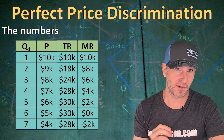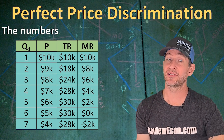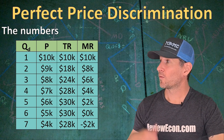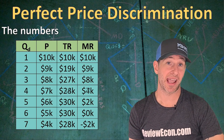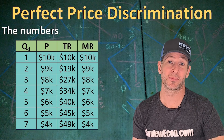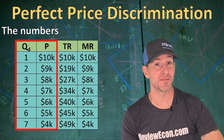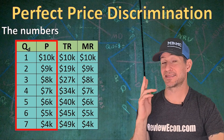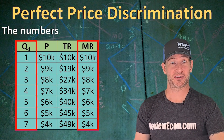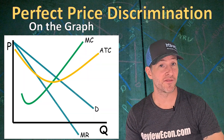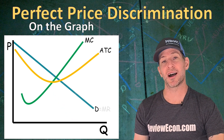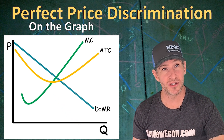But if this firm perfect price discriminates and charges the first student $10,000, the second student $9,000, the third student $8,000, and so on, we would see the total revenue change. With that, the marginal revenue increases to being equal to the price being charged. If we graph out the quantity and price columns, that is the demand curve. And when we graph the quantity with the marginal revenue, that gives us the marginal revenue curve. On the graph, that means when a firm perfect price discriminates, that marginal revenue curve merges upward and becomes equal to the demand curve.